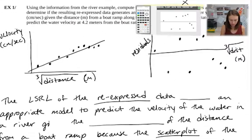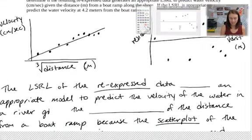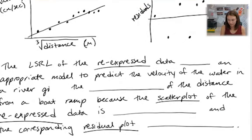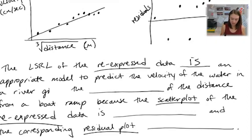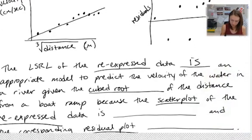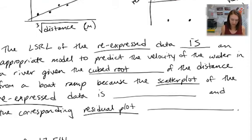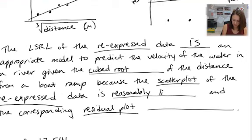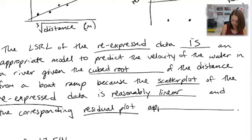The least squares regression line of the re-expressed data is an appropriate model to predict the velocity of water in the river, given the cubed root of the distance from a boat ramp, because the scatter plot of the re-expressed data is reasonably linear and the residual plot of the re-expressed data appears random.